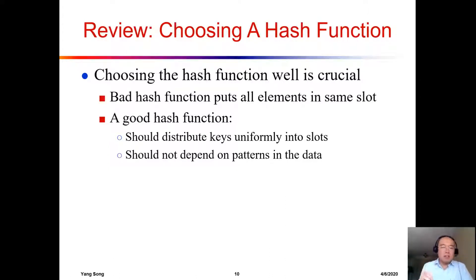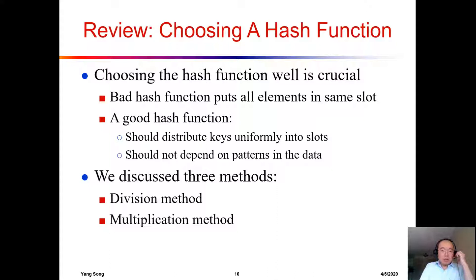On the opposite, a good hash function should distribute the keys uniformly into the slots and should not depend on the patterns of the data. This is an ideal hash function. We are going to discuss three methods: the division, the multiplication, and the universal hashing.